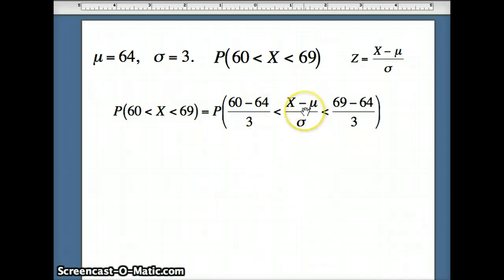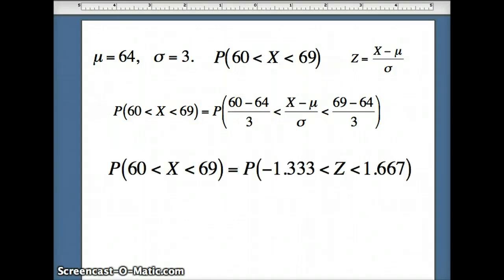So it will look like this. And then x minus mu over sigma becomes z. And those numbers simplify: negative 4 thirds and 5 thirds, or negative 1.333 and 1.667 approximately.